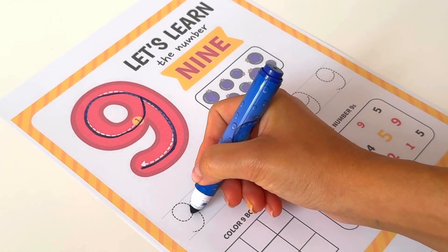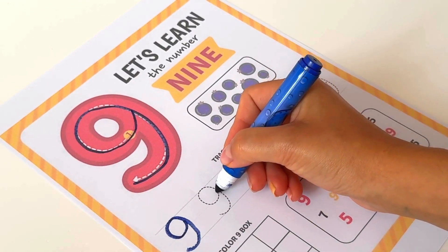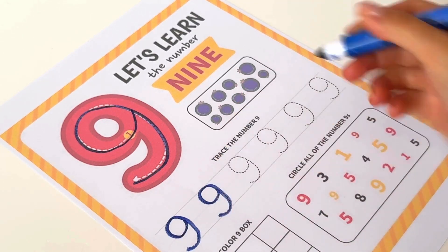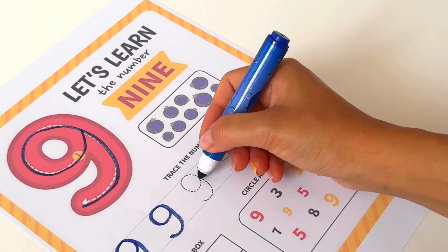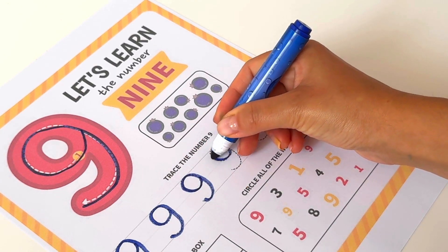You see, we have to make a circle and then we go down. We make a circle and then go down. It's not very hard right? You just have to keep practicing.